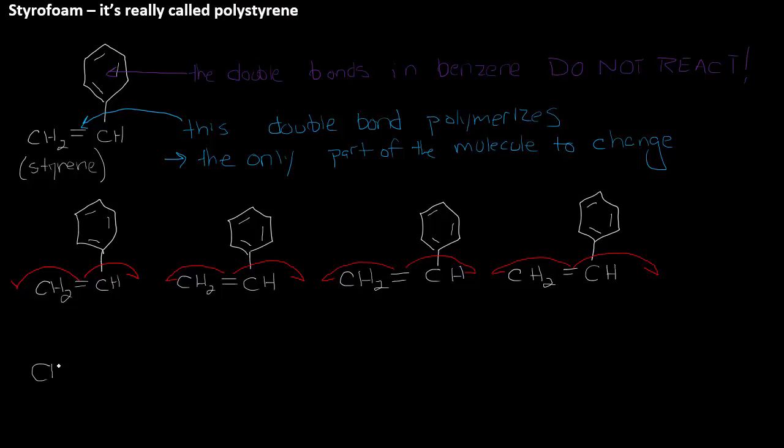So these will be a formal covalent bond between each of the styrenes. And the double bond is removed and we get a very long chain of styrene molecules.